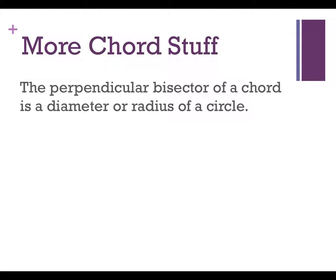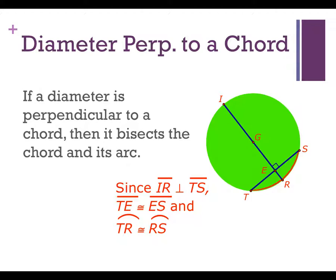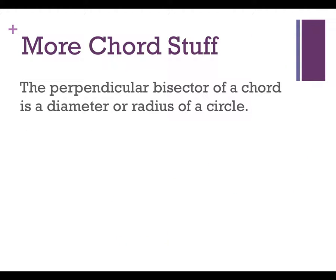Perpendicular bisector of a chord is a diameter or radius of the circle. So this, in essence, is the converse of the previous slide. So if I come over here, I started with a diameter, I bisect a chord, it bisects the arc. So the next one then says, okay, well let's start with a perpendicular bisector of a chord, we'll force it to be perpendicular, then it must be a diameter. Same picture, it's just a matter of what we started with.